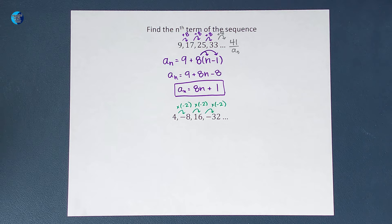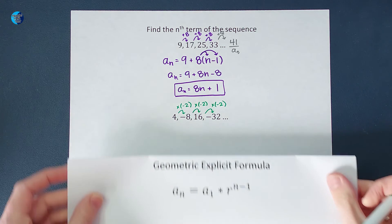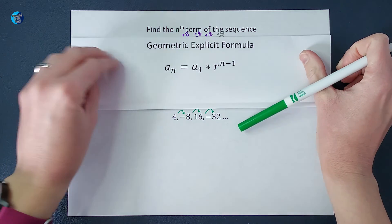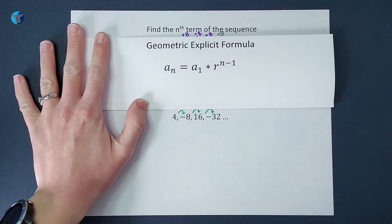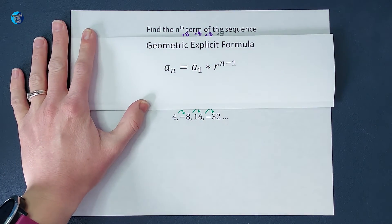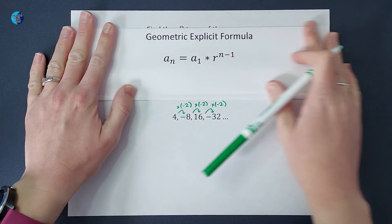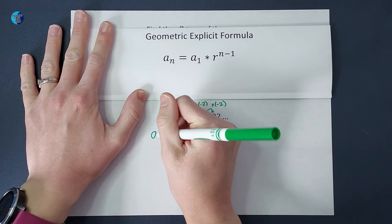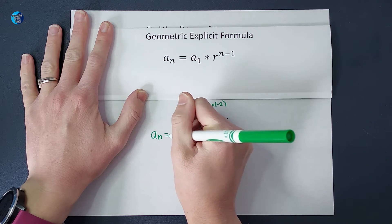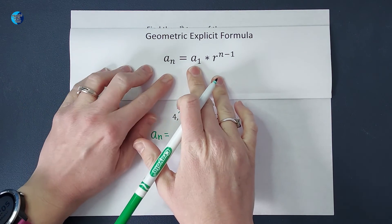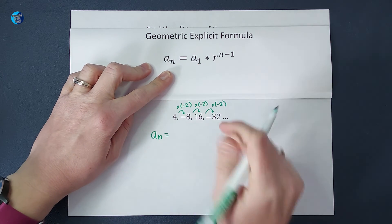So I need to use my geometric explicit formula to be able to give you an equation to find the nth term or whatever term you want. So we're going to go ahead and fill this in again. So a sub n or whatever number you want to find is equal to the first number in my sequence.